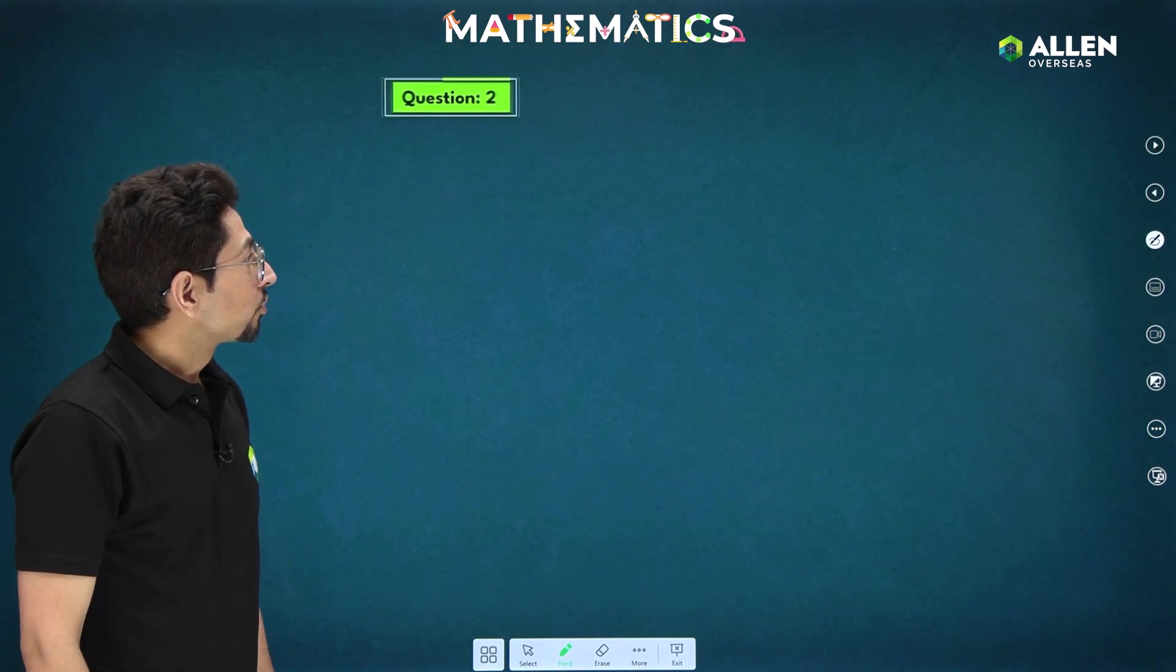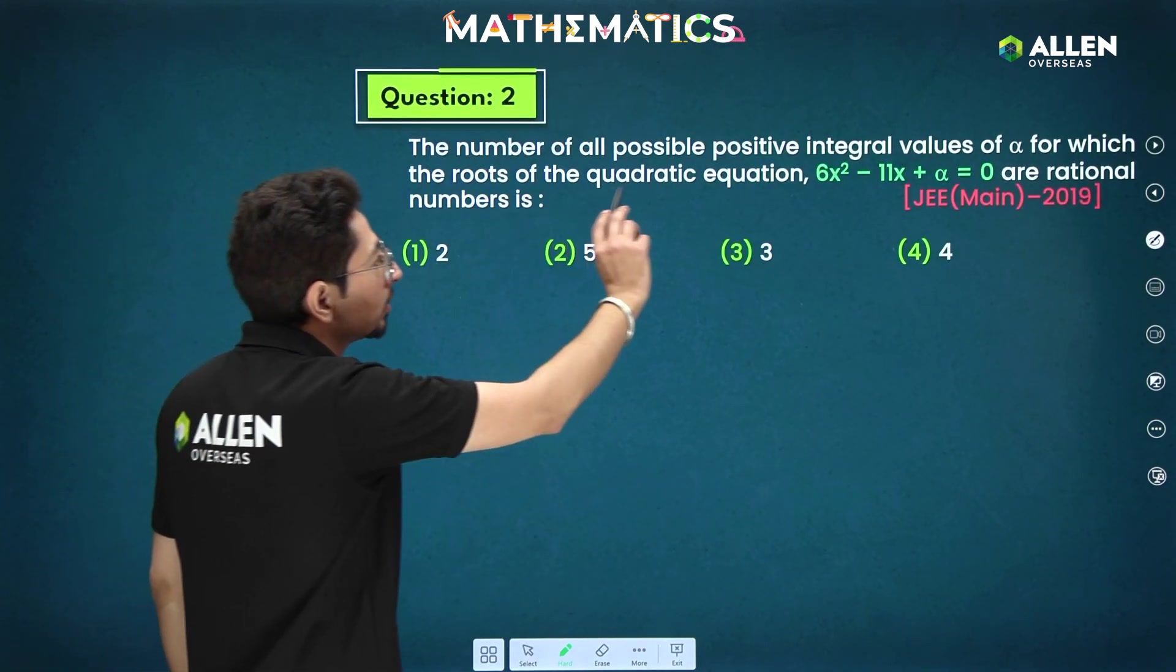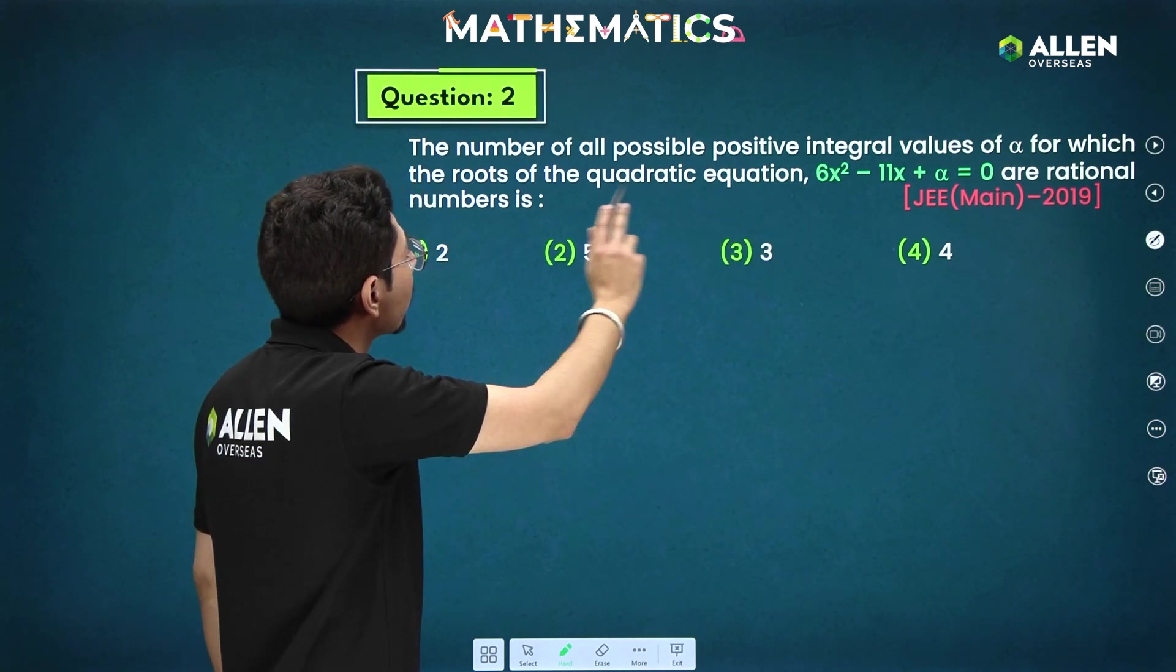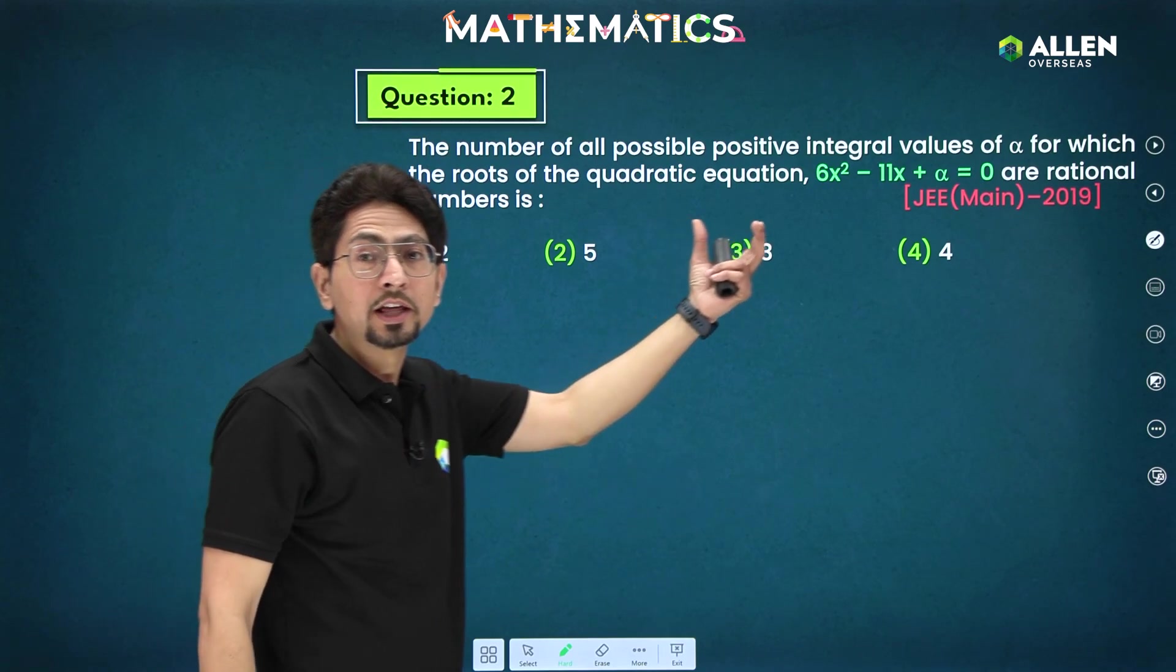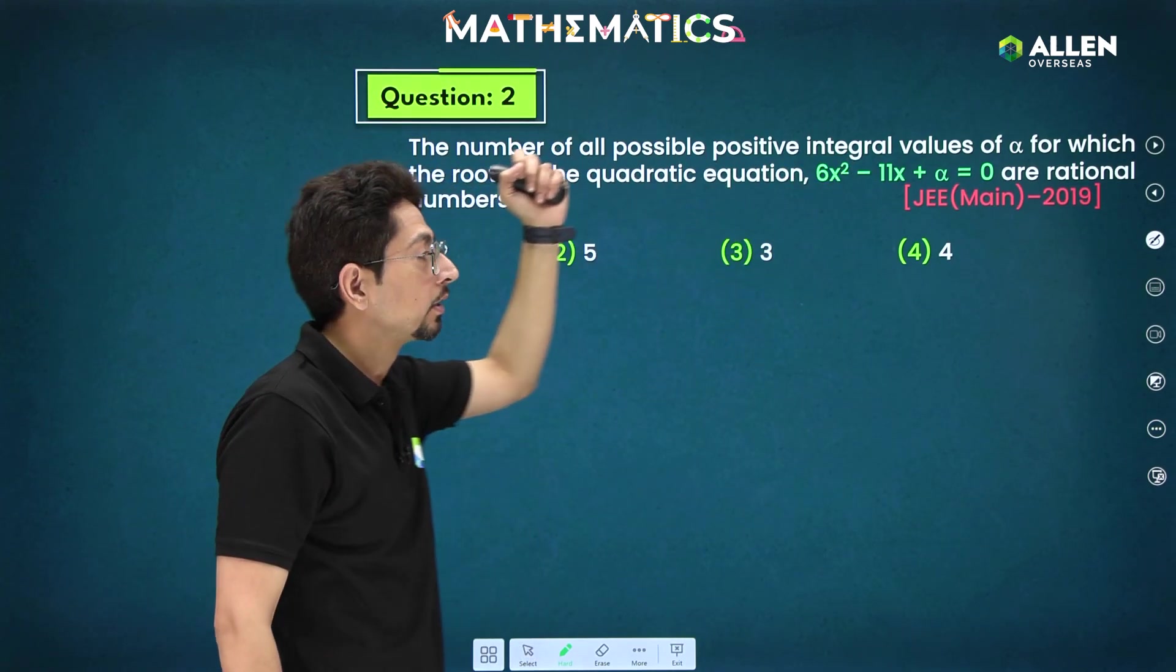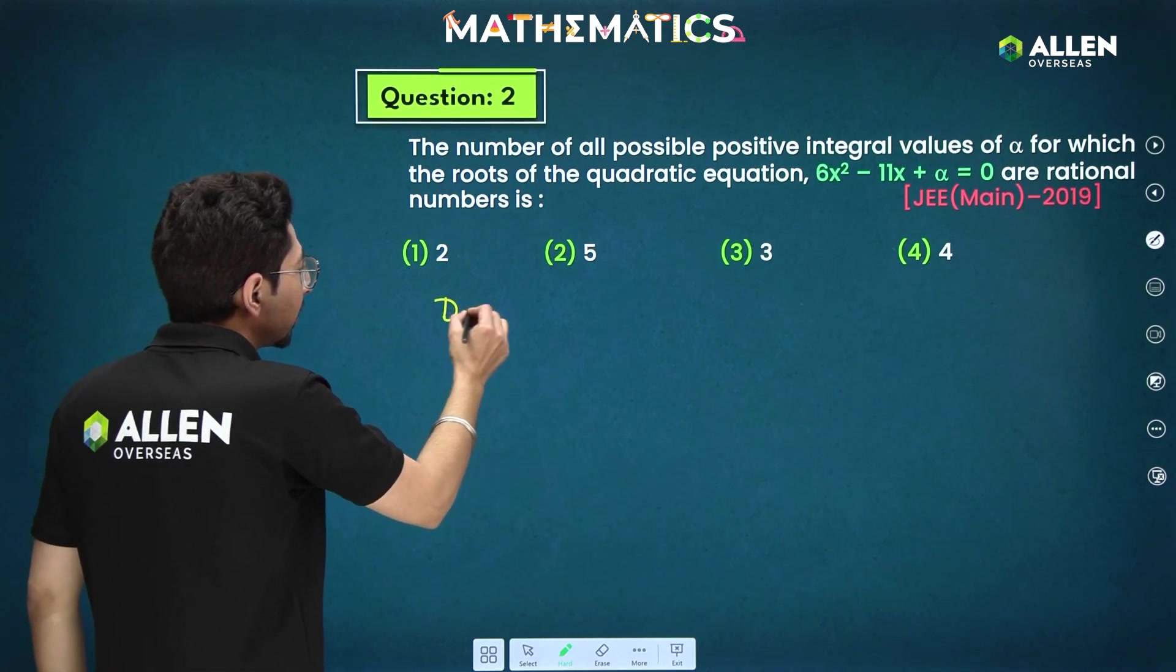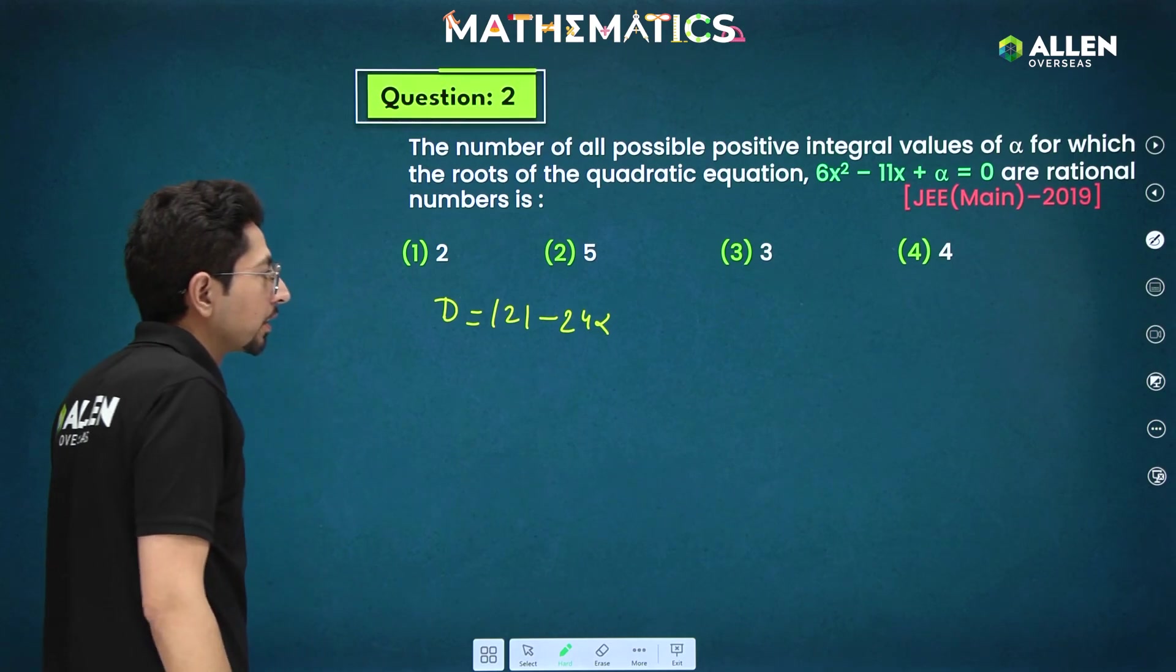Moving on to next question. Proceeding with this question, what we have been given? Number of all possible positive integral values of alpha for which roots are rational numbers. Now, when you will be getting rational roots, you just require discriminant to be a perfect square. What will be discriminant here? Discriminant b² - 4ac. This is the discriminant.